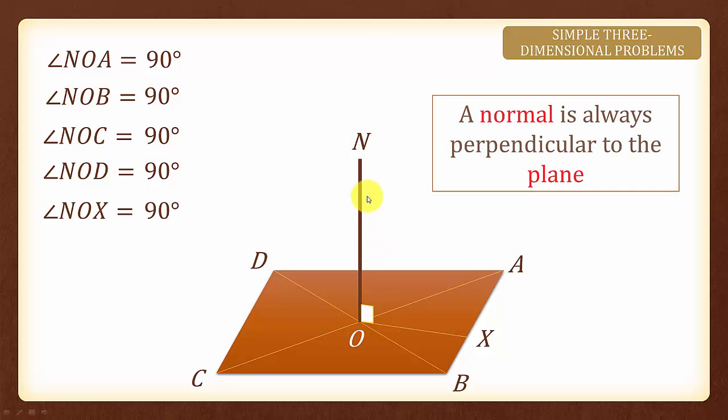Hence, a normal is always perpendicular to the plane. At times it does not look 90 degrees. But if you have a normal that cuts vertically through the plane, the angle it makes with the plane will always be 90 degrees.